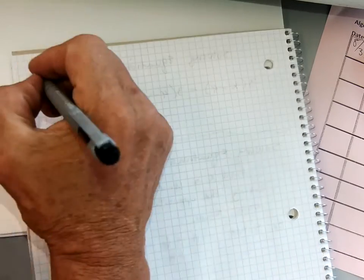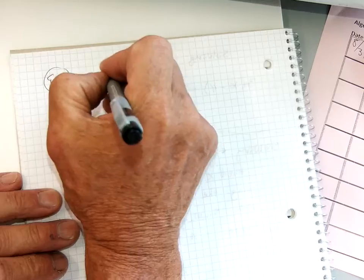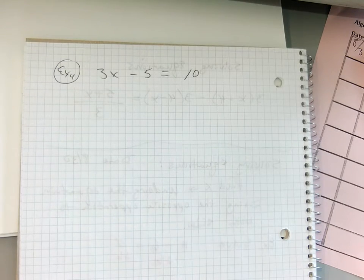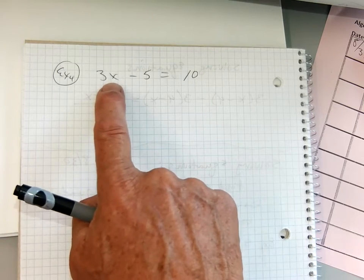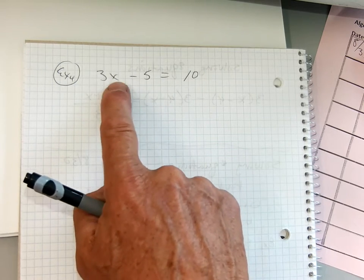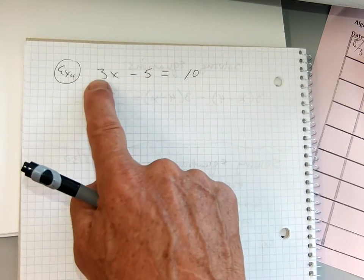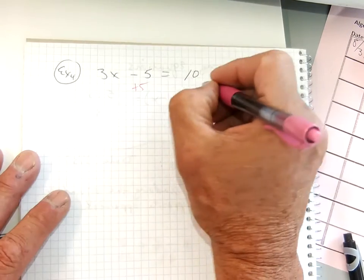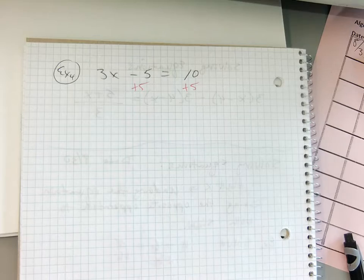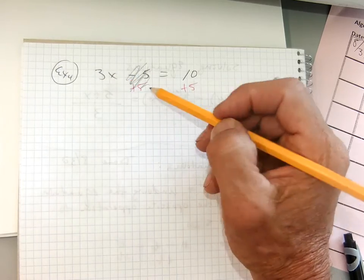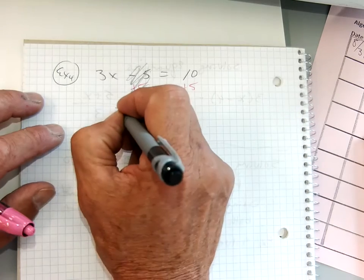Now, I'm going to turn my page. I have example four, 3x minus 5 equals 10. Two-step equation. This is a two-step equation. Here's the x. These are the numbers around it. I want to get rid of the 5 and the 3, so all I have is x. Do the opposite. The opposite of minus 5 is plus 5. I want you to go plus 5, plus 5. I want you to do it the way I do it. The reason I do the opposite is because negative 5 and 5 is gone. I want to get rid of all the numbers around the x.